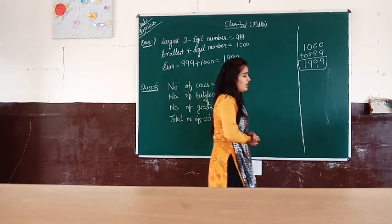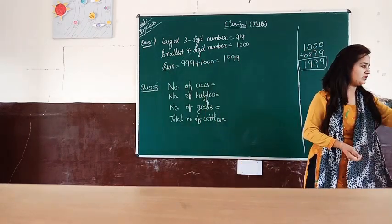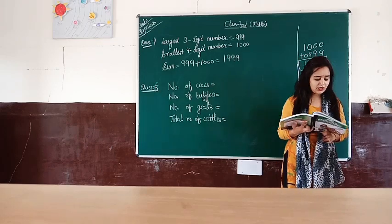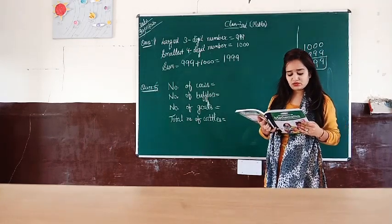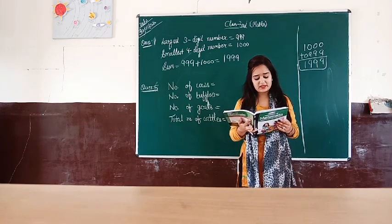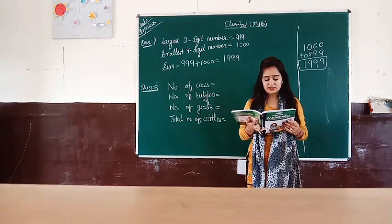And next question, question number 5. There are 2,735 cows, 3,259 buffaloes, and 526 goats in a village. How many cattle are there in that village?